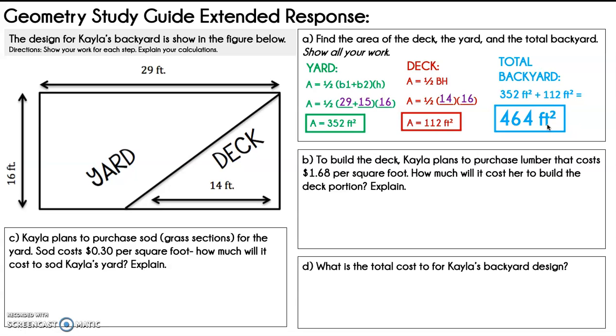Now, part B says, to build the deck, Kayla plans to purchase lumber that costs $1.68 per square foot. How much will it cost her to build the deck portion? So we're working with the deck portion right here.